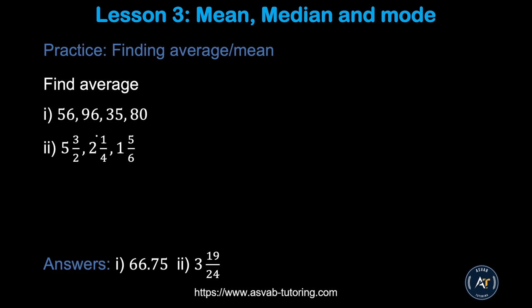There are a couple of practice problems. Try by yourself and make sure that you get the same answers: 66.75 and 3 and 19 over 25.